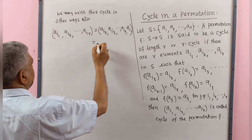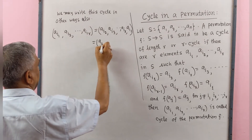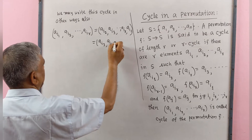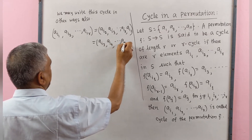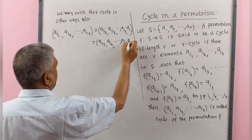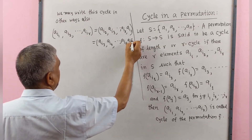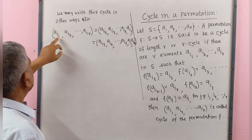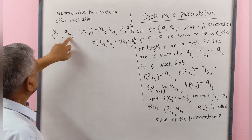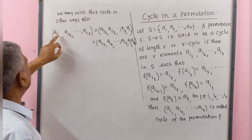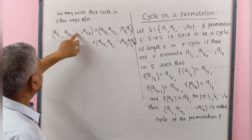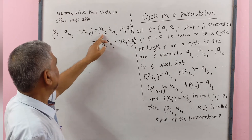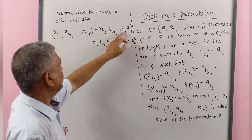This may also be written as (a_i3, a_i4, ..., a_ir, a_i1, a_i2). Here, each element — for example, a_i2 is the image of a_i1, a_i3 is the image of a_i2, and a_i1 is the image of a_ir.